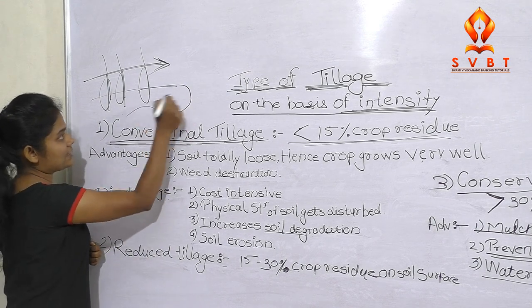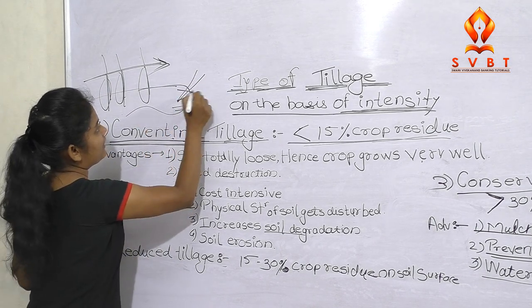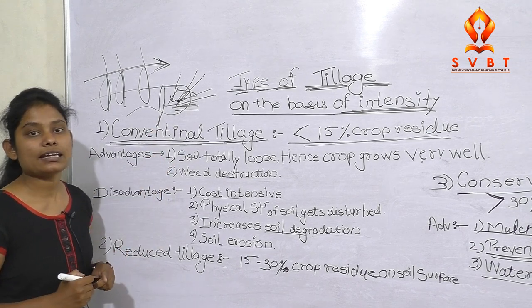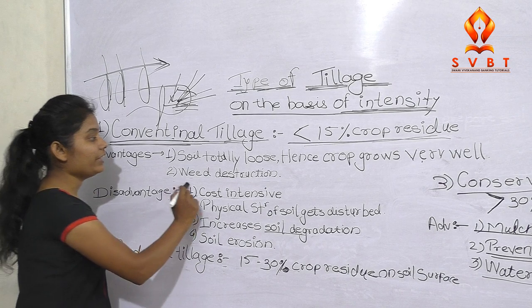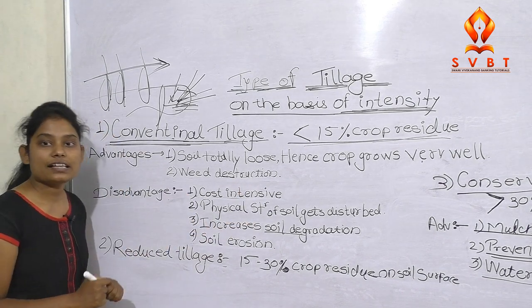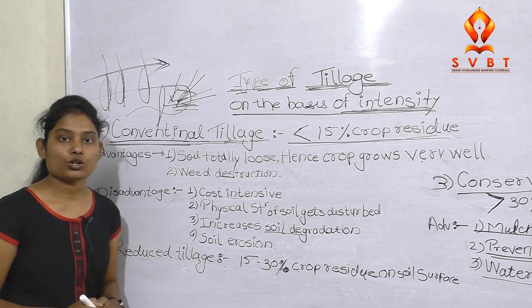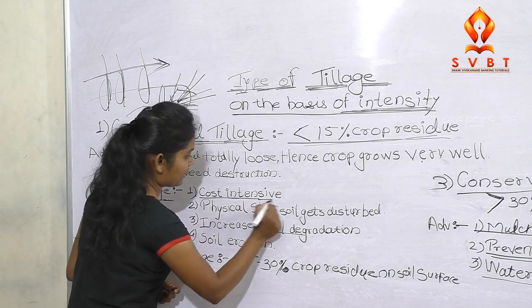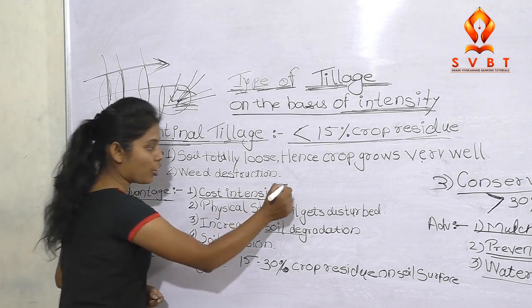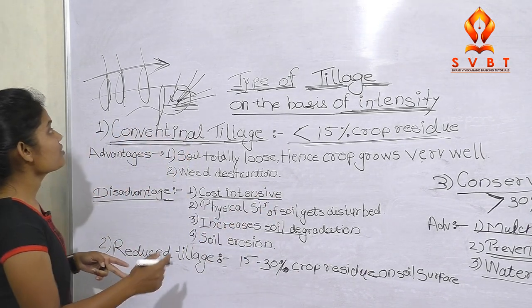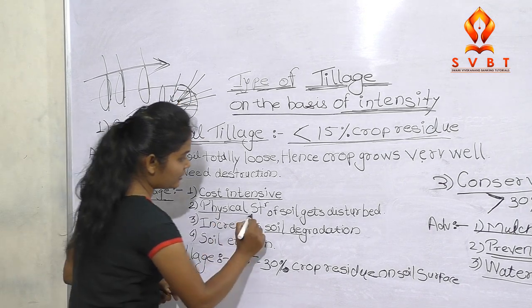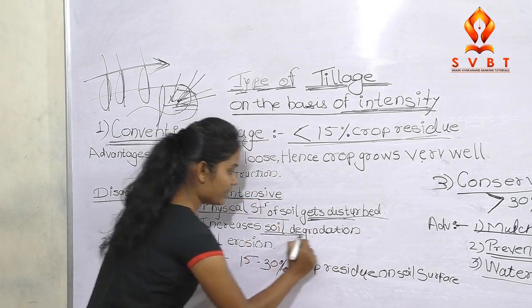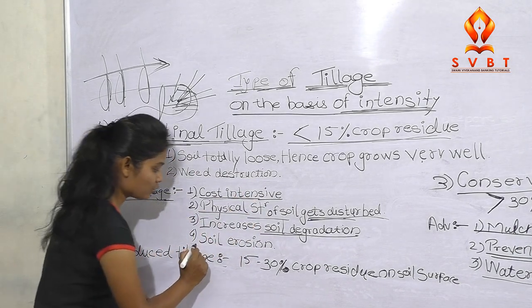Conventional tillage is the most common. There is a lot of gaseous exchange and aeration is proper. There are crops in the soil and there is aeration, but the growth is good. However, weed destruction is very deep. In conventional tillage, weeds are very difficult to manage. The disadvantage is that the cost is very intensive. If you want to do a lot of plowing operations, the cost is very important. But the structure of the soil is completely disturbed and the soil is degraded, and soil erosion is a significant problem.